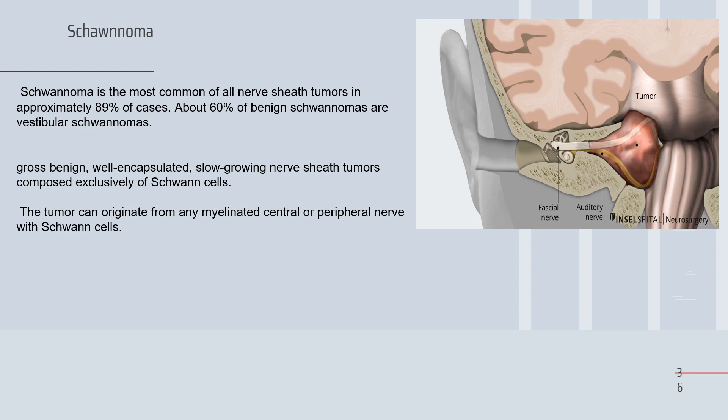Schwannoma is the most common peripheral nerve sheath tumor, accounting for about 89 percent of cases. About 60 percent of benign schwannomas are vestibular schwannomas. Grossly, it is a benign, well-encapsulated, slow-growing tumor composed exclusively of Schwann cells — the supporting cells.